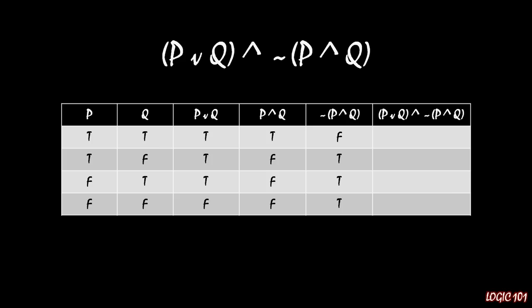That leaves us with the overall expression P OR Q AND NOT P AND Q — the conjunction of columns three and five. Just like any conjunction, we look for when both columns are TRUE and mark those as TRUE, and when at least one is FALSE we mark it FALSE. Columns three and five are both TRUE only in the middle two rows, so those get TRUE. The top row gets FALSE because column five is FALSE, and the bottom row gets FALSE because column three is FALSE. In the middle two rows both component parts are TRUE, so the conjunction is TRUE. That is why P OR Q AND NOT P AND Q is in fact an exclusive OR.